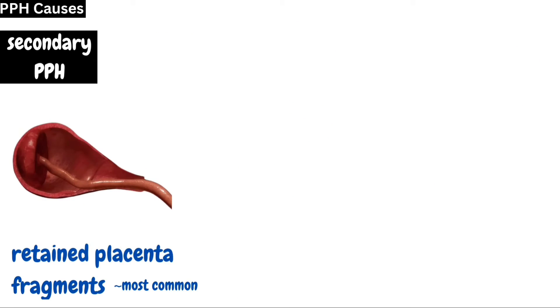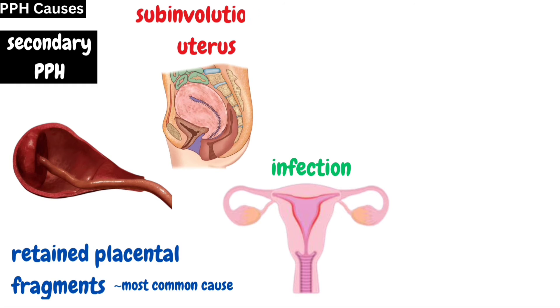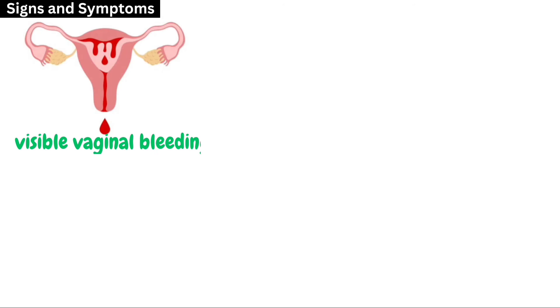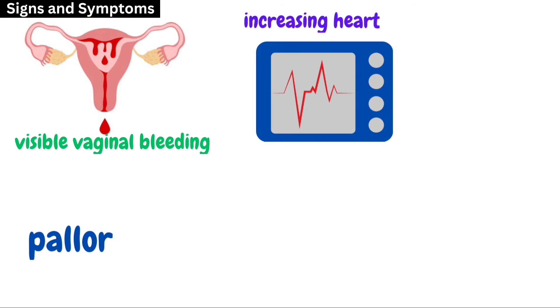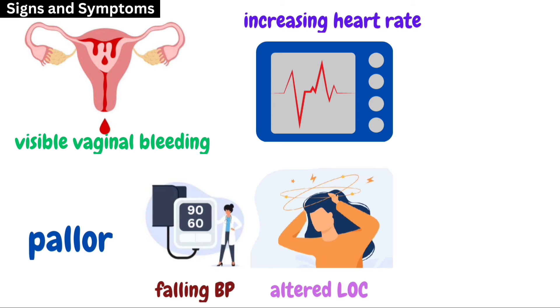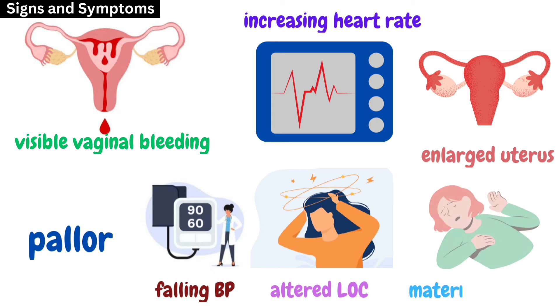The causes of secondary PPH include retained placental fragments, which is the most common cause, followed by infection, subinvolution of the uterus, and local trauma. The signs and symptoms include visible vaginal bleeding, pallor due to blood loss, increasing heart rate, falling blood pressure, and altered level of consciousness.